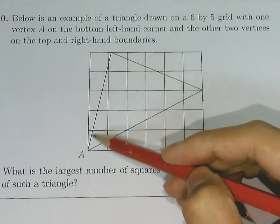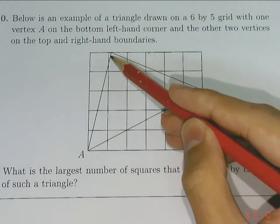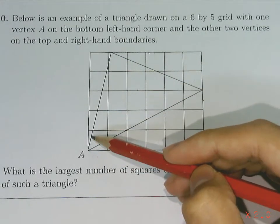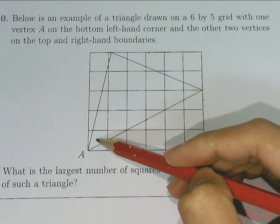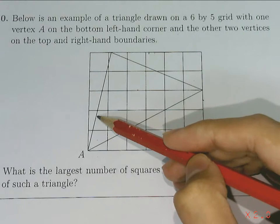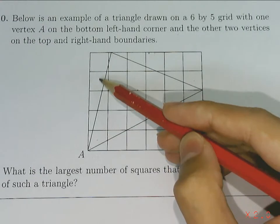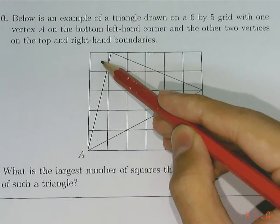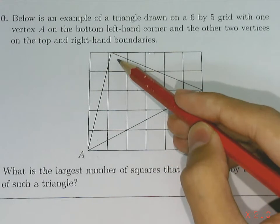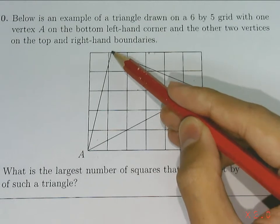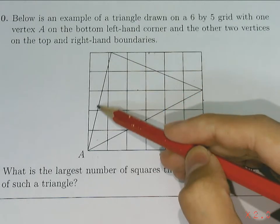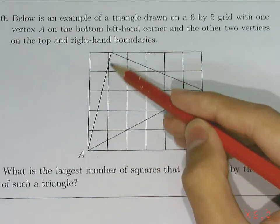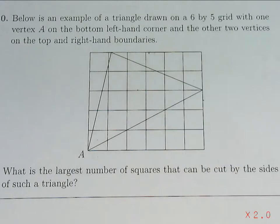For example, if you take this side, the number of squares which it cuts will be this square, this square, this square, this square, and this square — because this side of the triangle passes through or cuts through all these squares.